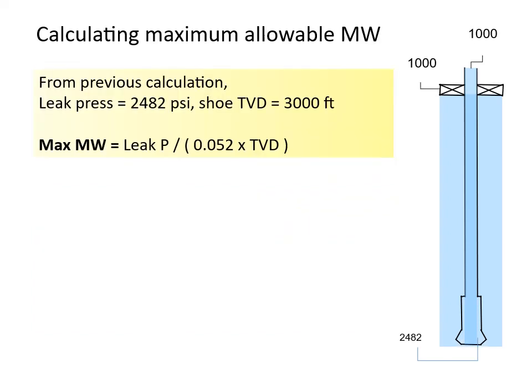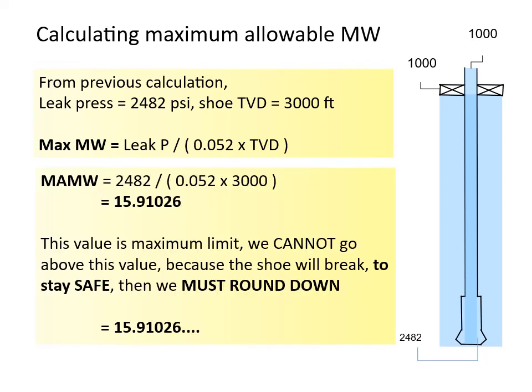From previous calculation, leak pressure is 2482 psi, while the shoe TVD is at 3000 feet. So the maximum allowable mud weight is 2482 divided by the multiplication result of 0.052 by 3000. 2482 divided by 156 equals 15.91026.